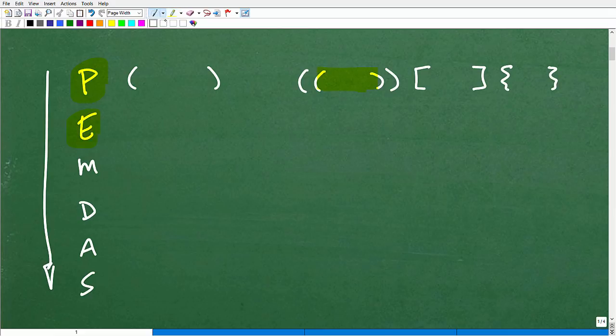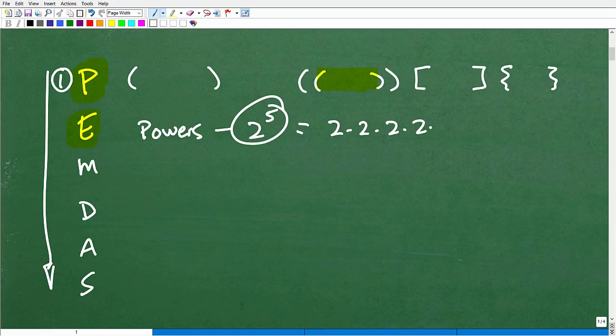Our next thing is E. That stands for exponents, or effectively powers. So let's just write this down here. Power. So we have like 2 to the 5th power. This is an E. So you need to know how to interpret something like 2 to the 5th power, which means what? 2 times itself, 5 times. So 1, 2, 3, 4, 5. This is 2 to the 5th power, which, of course, would be 32. Okay, so that's what E is.